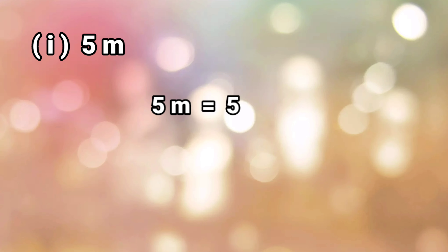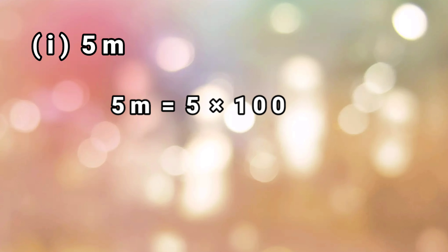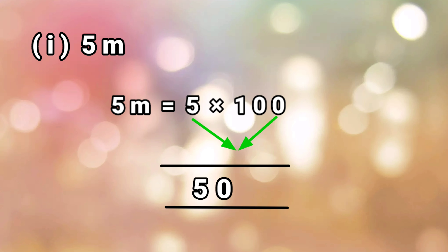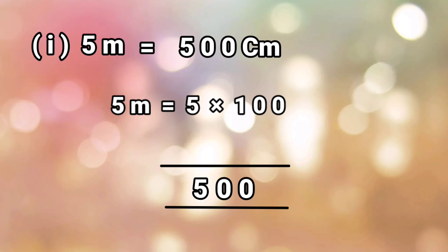The second sum is five meters. Five cross one hundred: one fives are five, zero fives are zero — because any number multiplied by zero is zero — and again zero fives are zero. So five meters is equal to five hundred centimeters.